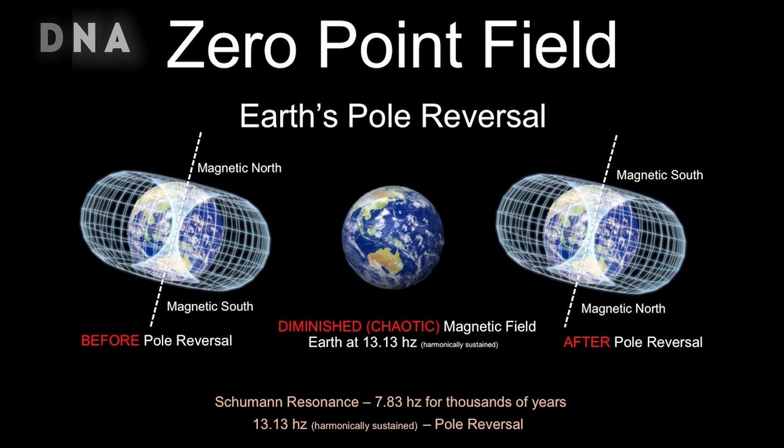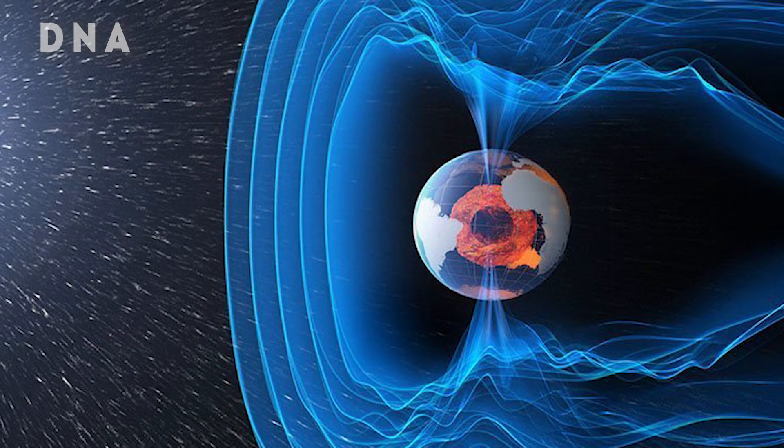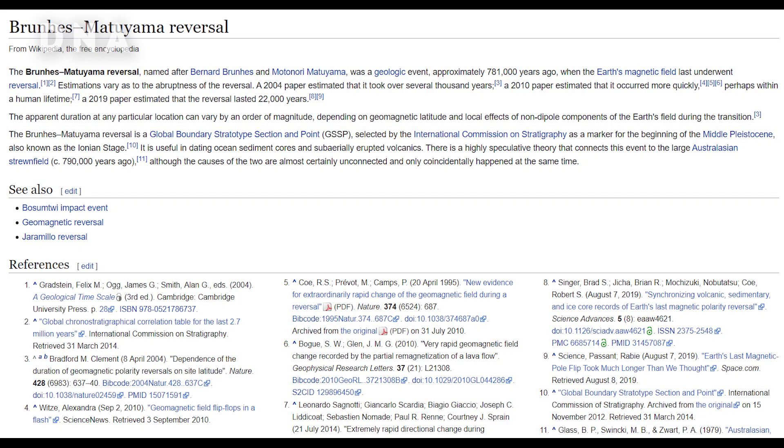One more speculation is that the weakening of the magnetic field is a sign that the Earth is heading for a pole reversal, means North Pole will flip to the South and South Pole will flip to the North. The pole reversal event has occurred a few times in the history of our planet, and the last time this occurred was 780,000 years ago, which was named Brunas Matuyama Reversal.